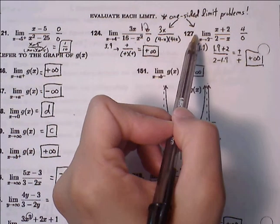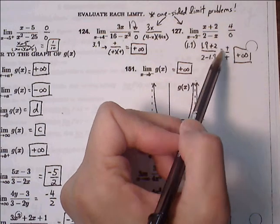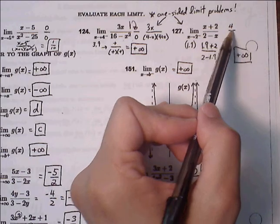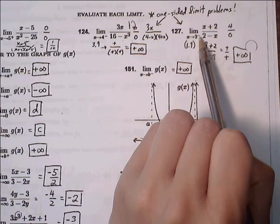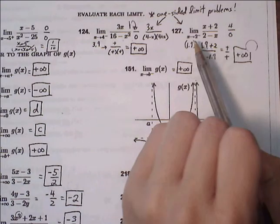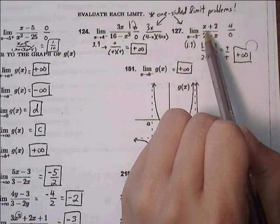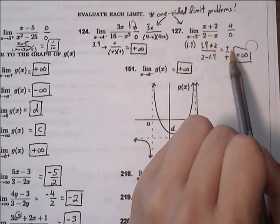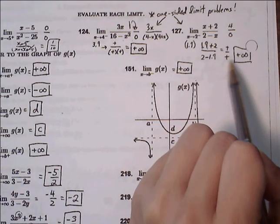127, as x approaches 2 from the left side of 2. First thing we do is plug in: 2 plus 2 is 4, 2 minus 2 is 0. So 4 over 0 is undefined. Normally this would be does not exist, but since this is a one-sided limit, we have to choose between positive or negative infinity. We choose a decimal on the correct side of 2, so let's use 1.9. In for x: 1.9 plus 2 is positive, and 2 minus 1.9 is also positive. Positive over positive is positive infinity.